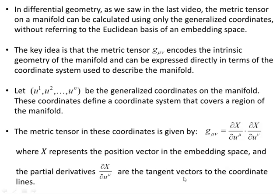In differential geometry, as we saw in the last video, the metric tensor on a manifold can be calculated using only the generalized coordinates without referring to the Euclidean basis of an embedding space. The key idea is that the metric tensor g_μν encodes the intrinsic geometry of the manifold and can be expressed directly in terms of the coordinate system used to describe the manifold.